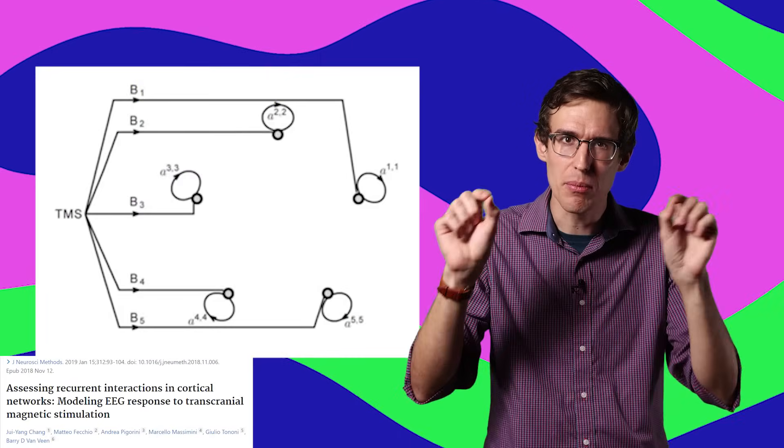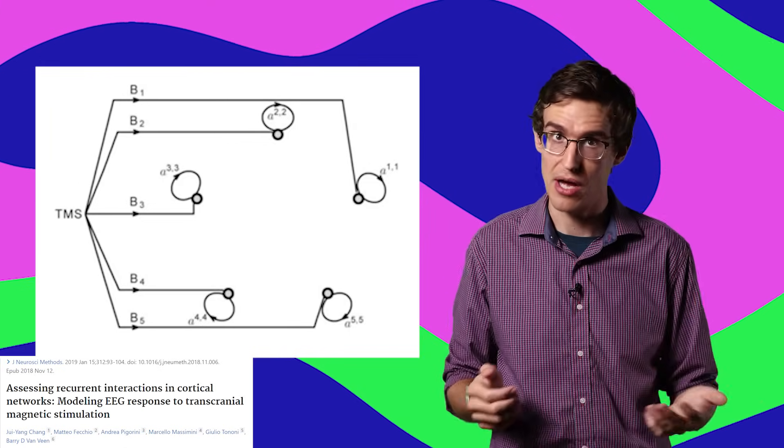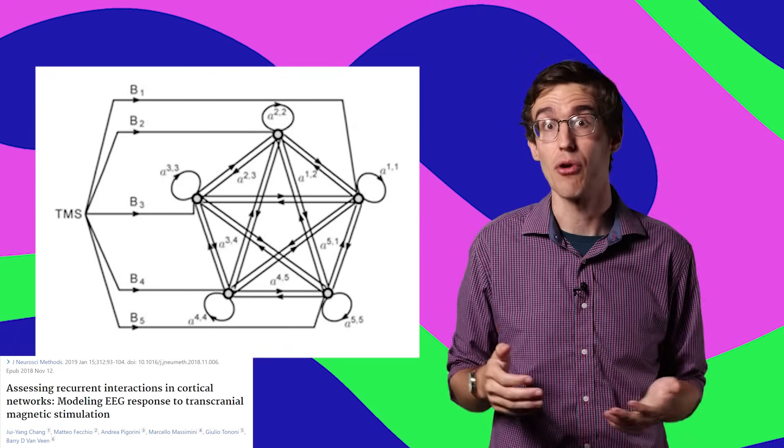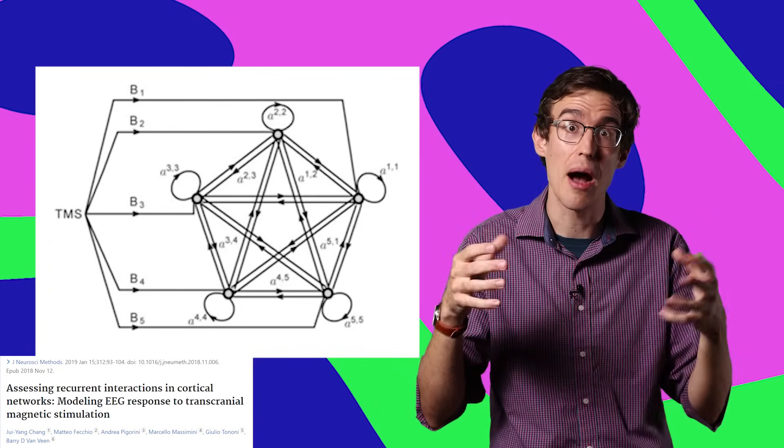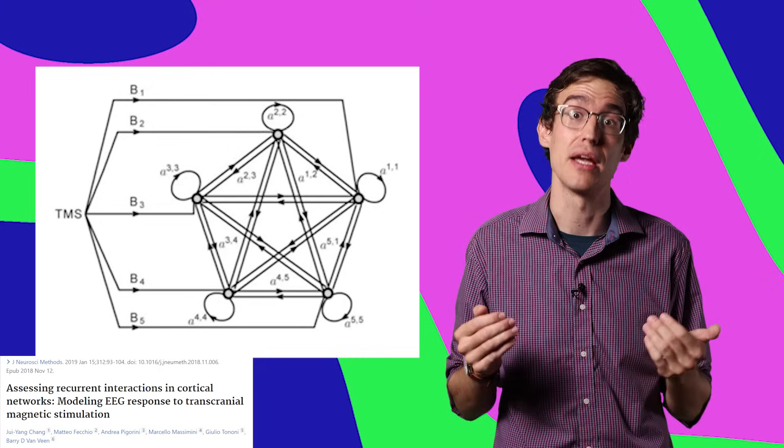The more tightly integrated the brain is as a whole, the higher it scores on the consciousness meter. If there's a little firing here and there, but the brain areas aren't really talking to each other, the brain probably isn't conscious. But if there's a lot of crosstalk and all the areas are influencing each other in complex ways, that suggests that the brain as a whole might be conscious.